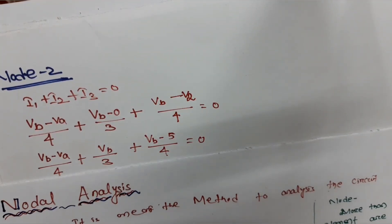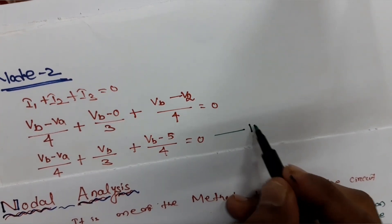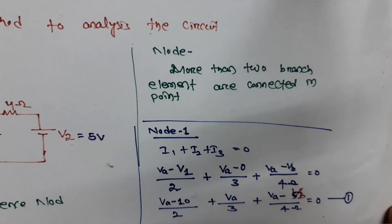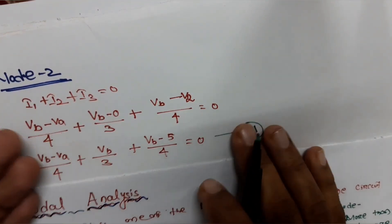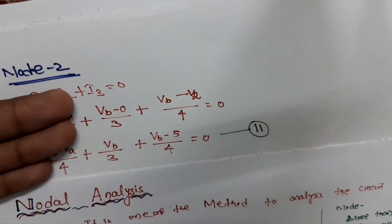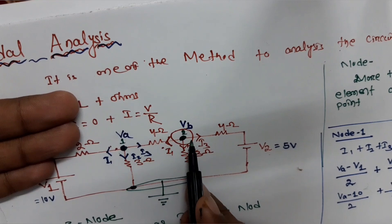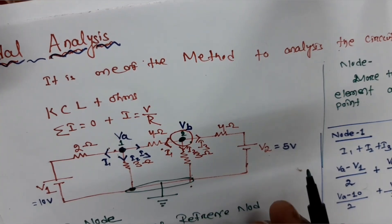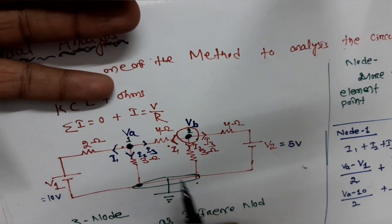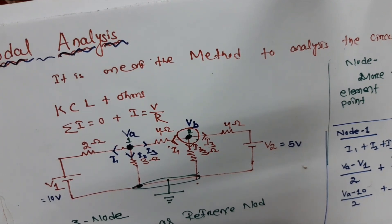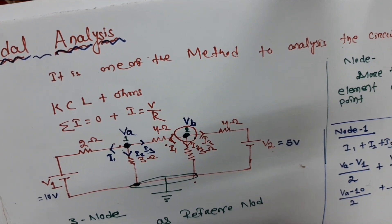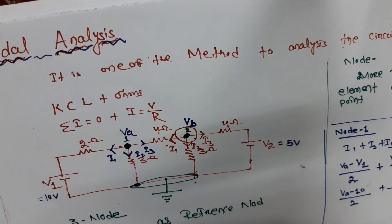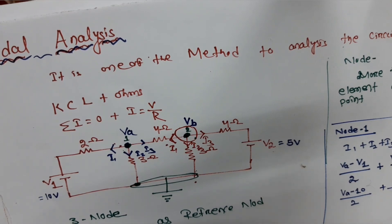We now have two equations — one from node 1 and one from node 2. If we solve those two equations, we can find the potential at each node and then calculate i1, i2, and i3. In our next class, we are going to solve some numerical problems using the nodal analysis method. Thank you for watching, please like, subscribe, and comment.